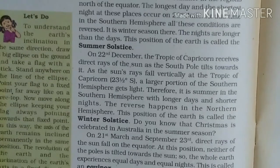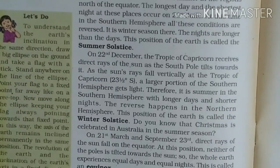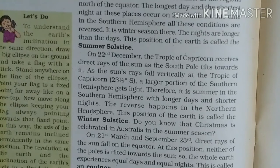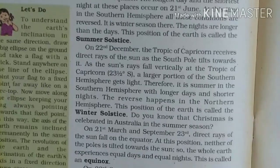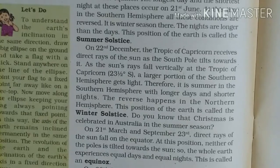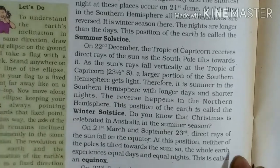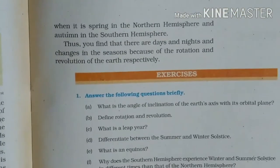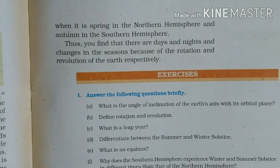On 23rd September, it is autumn season in the northern hemisphere and spring season in the southern hemisphere. Similarly, the opposite case: on 21st March, it is spring in the northern hemisphere and autumn in the southern hemisphere.